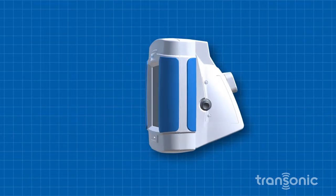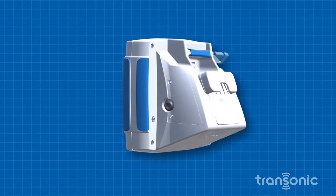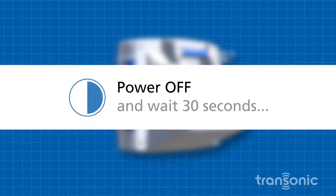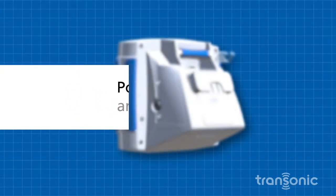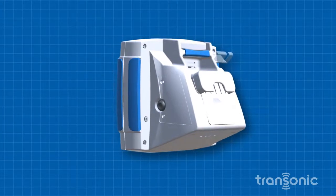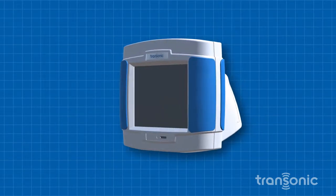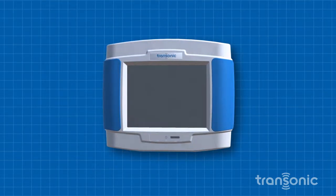Use the switch on the side of the HDO3 monitor to turn the power off. Wait 30 seconds and turn the power back on again. Resume taking measurements. No information has been lost.